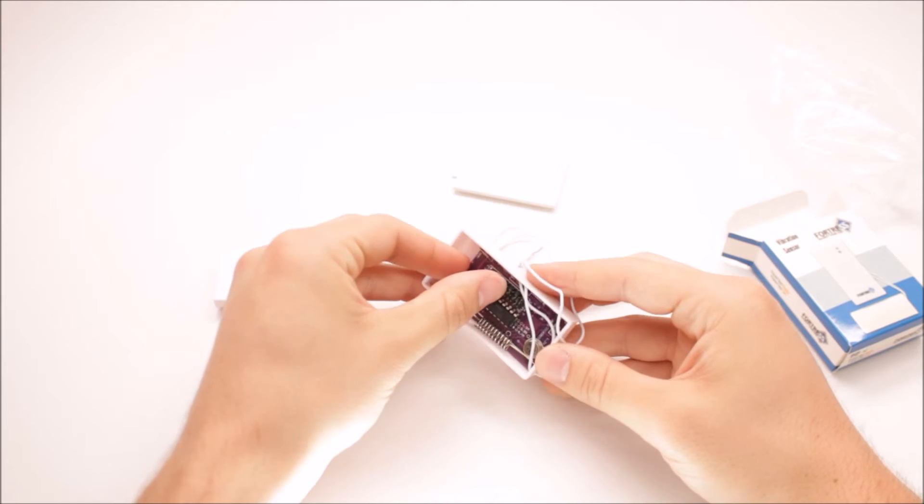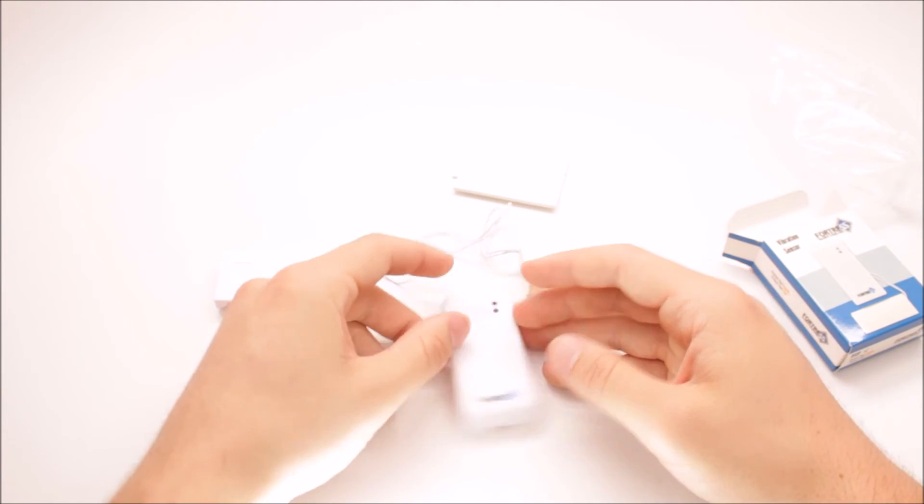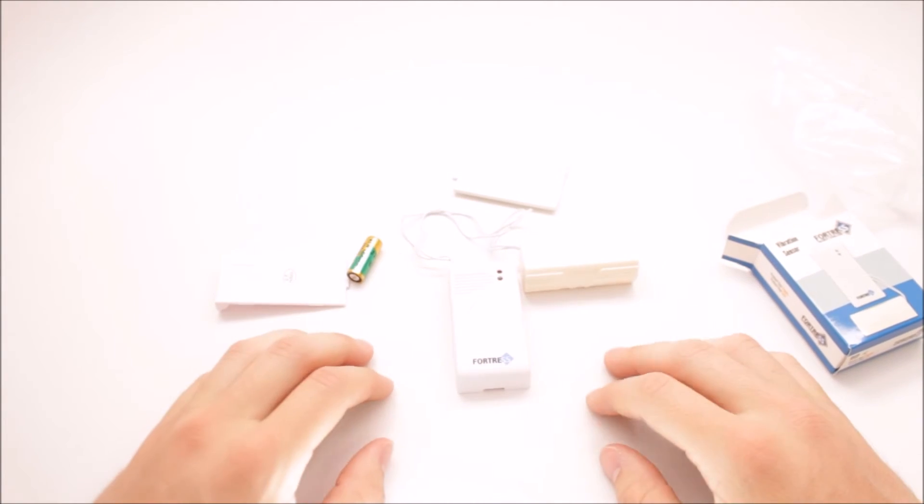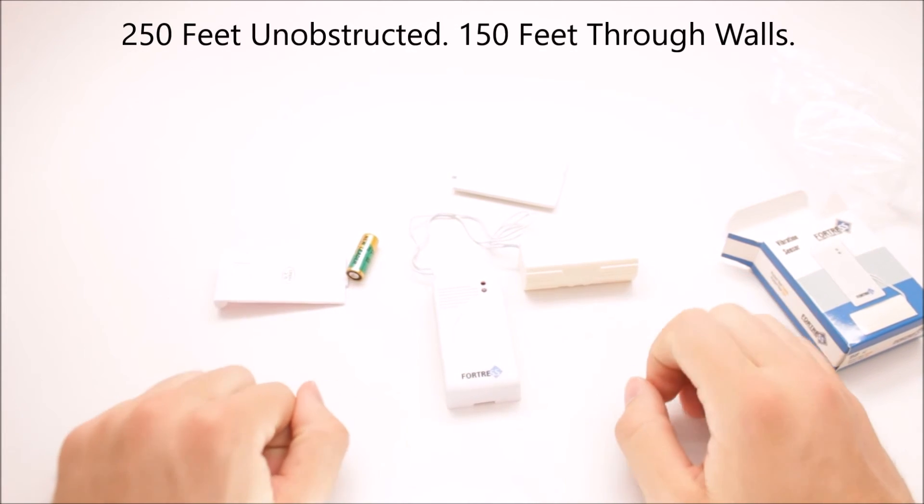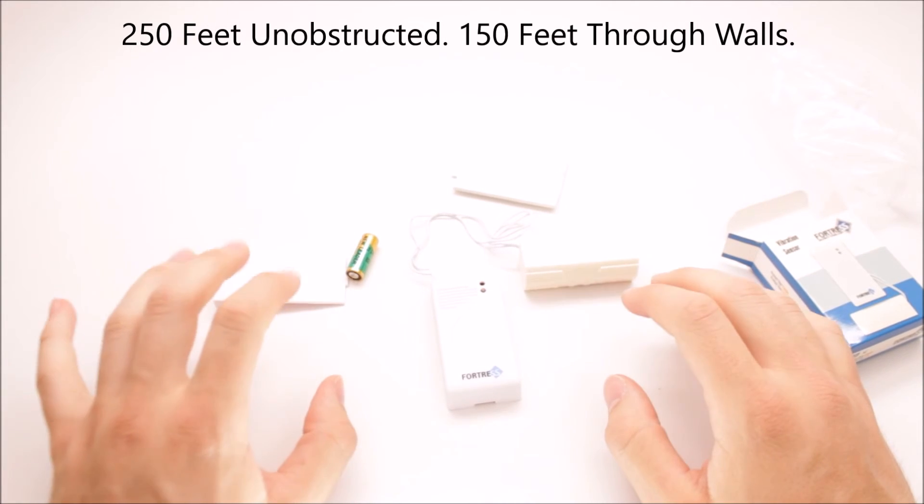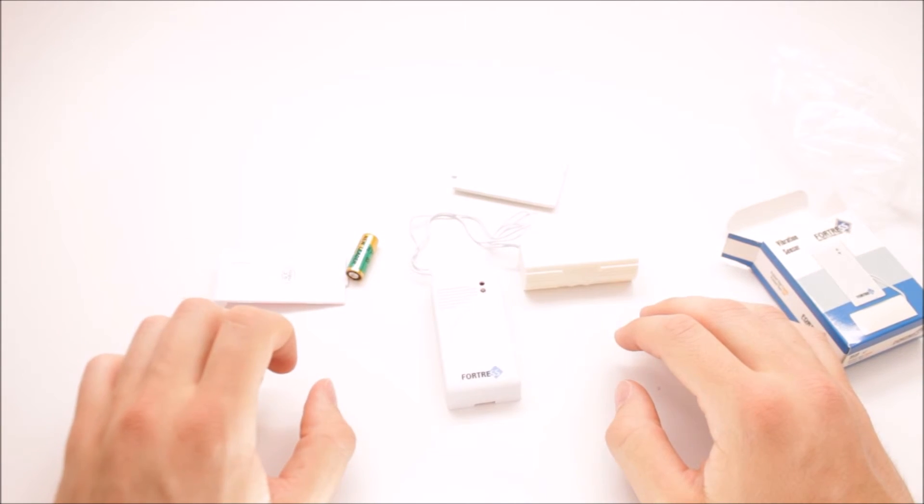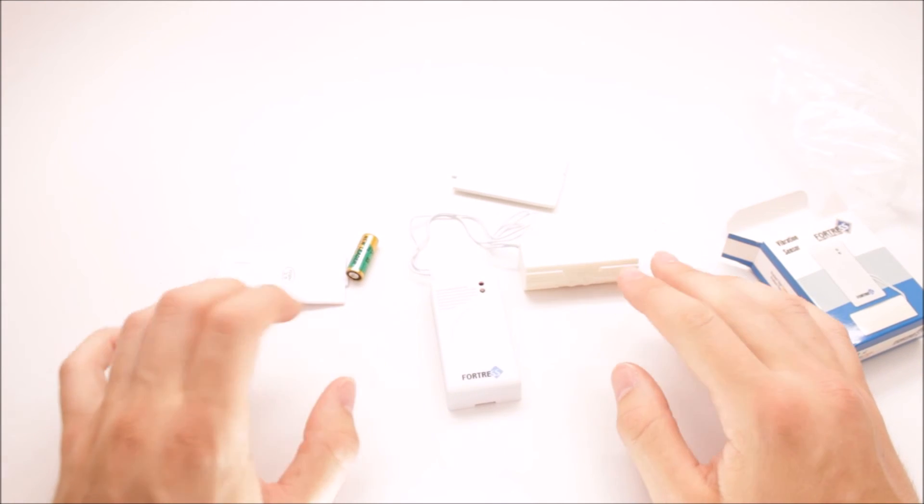As far as mounting range from the main panel, you can have this about 150 feet from the main panel. Usually a safe bet through walls and everything. Unobstructed, it usually is up to about 250 feet range, but 150 feet is usually safe parameters to stay within.